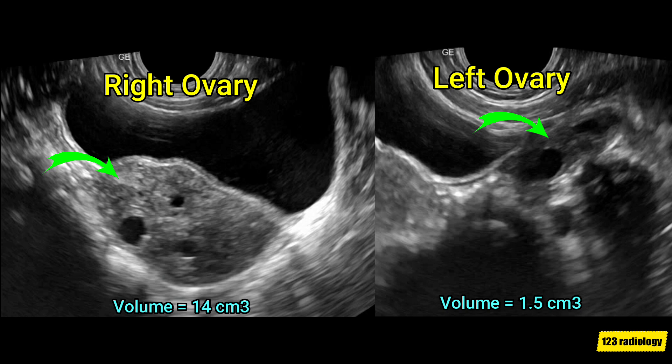As you can see, the right ovary is enlarged with a volume of about 14 cubic centimeters. The left ovary on the left side of the screen is normal in size with a volume of about 1.5 cubic centimeters. The right ovary shows increased echogenicity as compared to the normal left ovary.